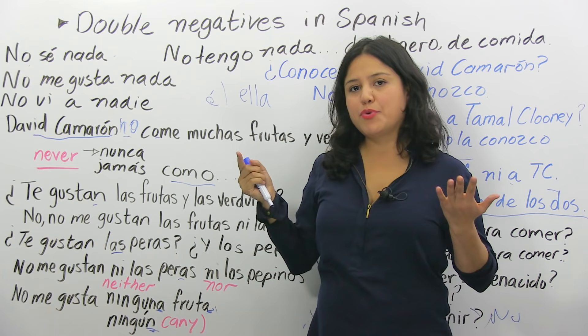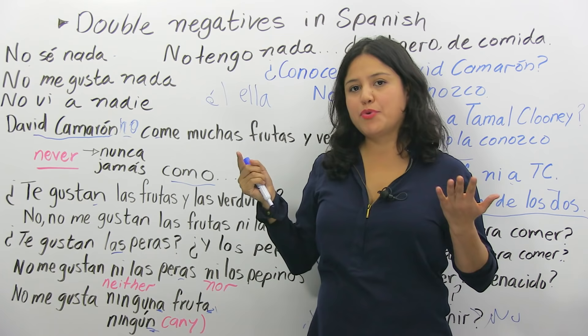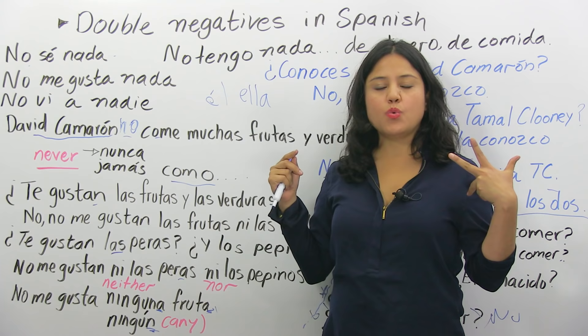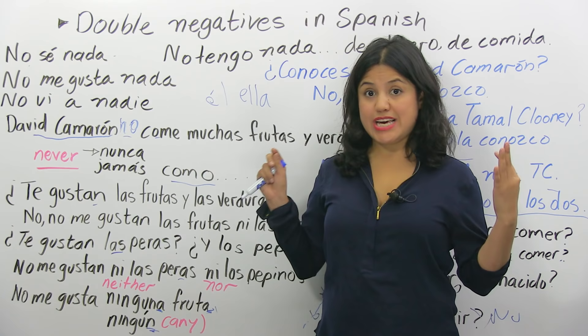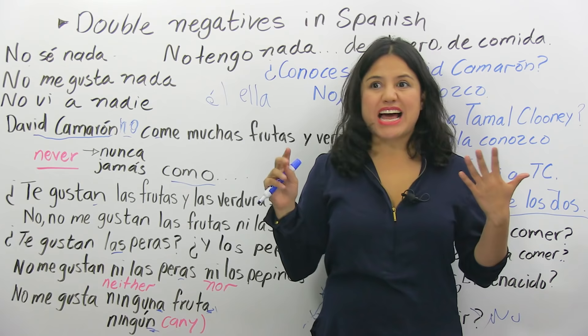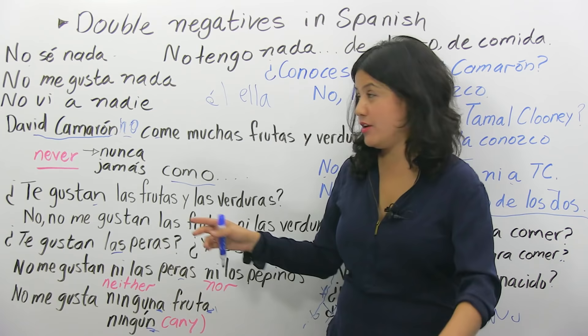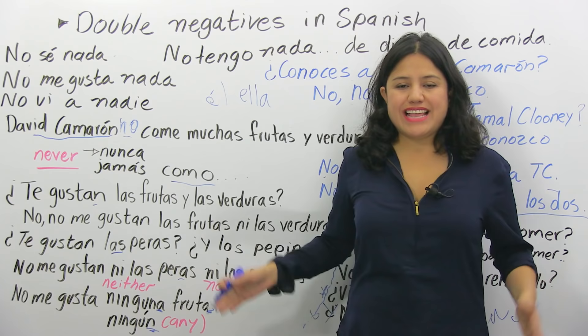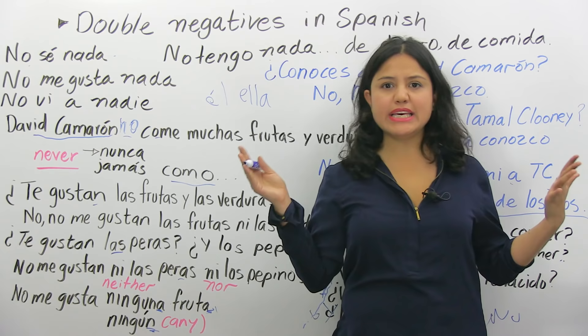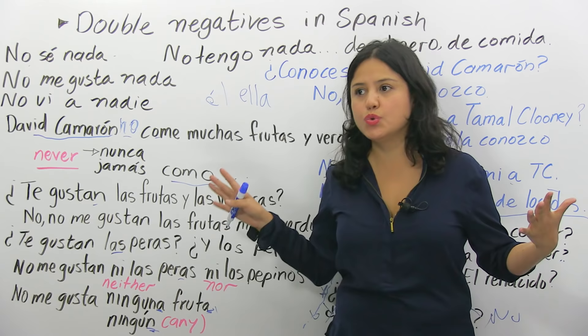Before I go, here are the important key phrases. No sé — I don't know. No sé nada — I don't know anything about it. No me gusta — I don't like it. No me gusta nada — I don't like it at all. No tengo nada — I don't have anything. No tengo nada de dinero, no tengo nada de comida — I don't have any money, I don't have any food. No tengo nada.